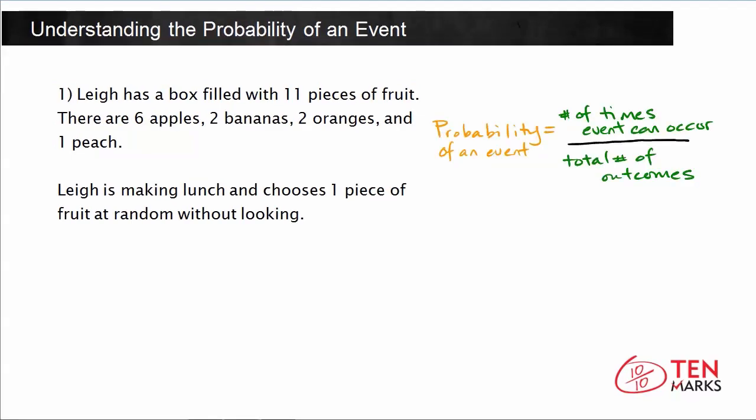Okay, so now let's try and find a probability. What is the likelihood that she will pick a peach at random? So there are 11 pieces of fruit in all, so we know that. That's the total number of outcomes. When she reaches in, she has a total number of outcomes of 11.